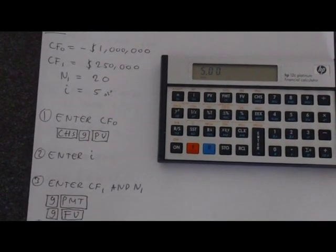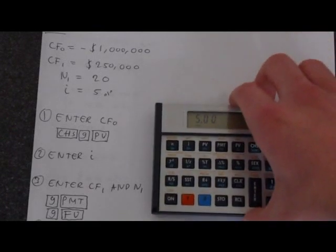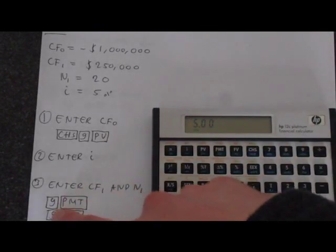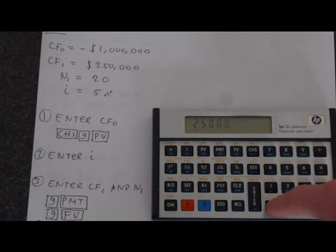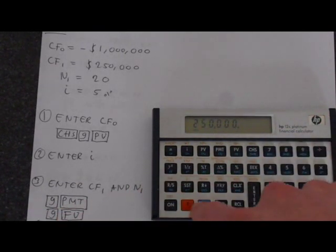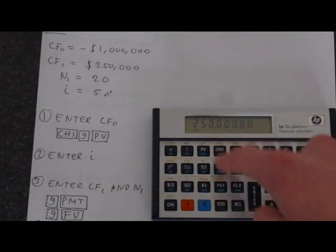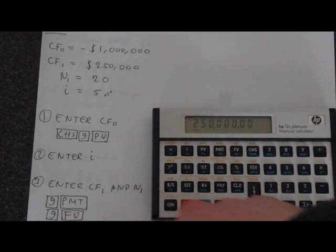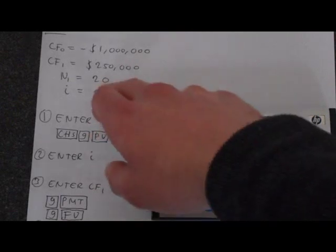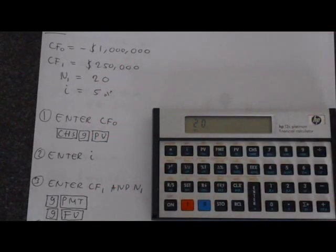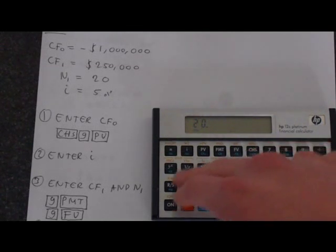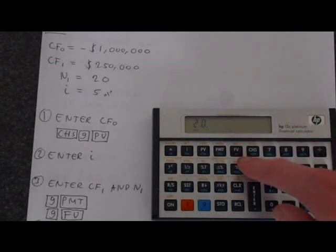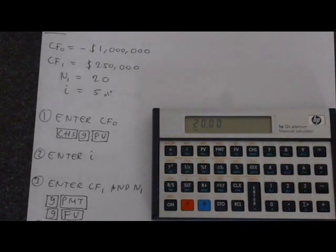Then let's enter our cash flow 1 and N1. So simply type them in. We've got $250,000 using the commas to help us. G, put that into payment, which is cash flow J. And then we've got 20, it's over 20 years. So that cash flow is repeated 20 times. Then putting that into G and then future value. Now we've got all the information that we need.